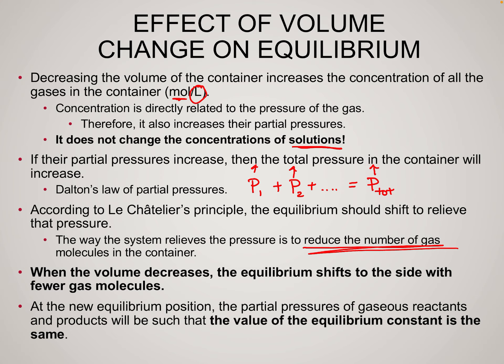At this new equilibrium position, the partial pressures of the gaseous reactants and products will be such that the value of the equilibrium constant remains the same. It doesn't matter what pressures or concentrations we start with — at a given temperature, when you plug values into the K expression, K is always going to be the same. The pressures or concentrations themselves may differ, but K is always a constant.